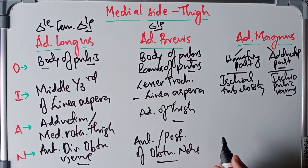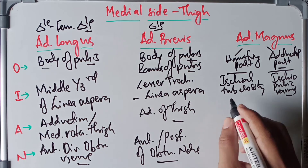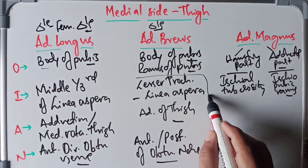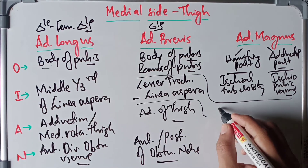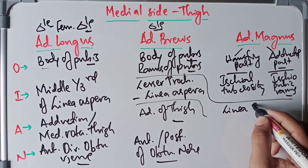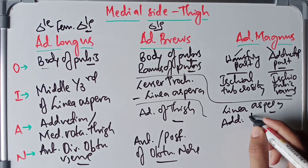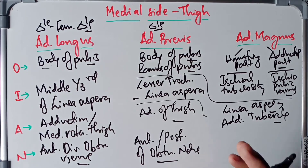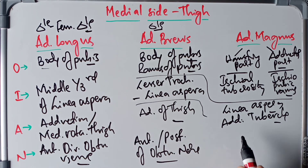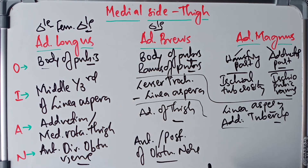The adductor magnus has four insertions: it inserts into the linea aspera, the adductor tubercle of the femur, the middle supracondylar line of the femur, and the medial margin of the gluteal tuberosity. It is a very large muscle, hence the multiple insertion points.